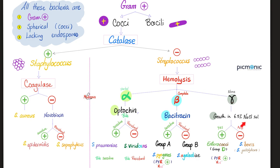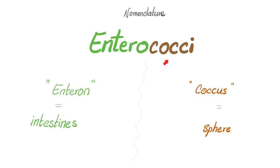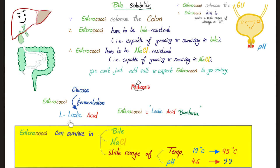They can grow in 6.5% salt solution, they can grow in bile, and they are PYR-positive. Enterococcus literally means the spherical bacteria that live in your intestine, i.e., the colon. Enterococci can survive bile, salt, and a wide range of temperature and pH changes — that's why they can survive in the colon and the urinary tract.